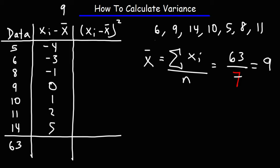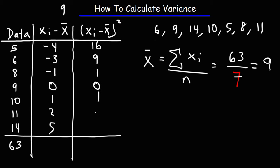Now what we're going to do next is take the square of those differences. The square of negative 4 is 16. So these are going to be positive numbers. The square of negative 3 is 9. The square of negative 1 is 1. The square of 2 is 4. And the square of 5 is 25.